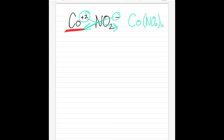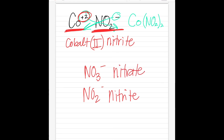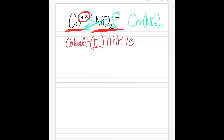Let's name this. Find the name of the first term: Co²⁺ - capital C, lowercase o. I see cobalt. It is highlighted, so I need a Roman numeral. This says plus two, so I need Roman numeral II. If it were plus three - the other option for cobalt - it would be Roman numeral III. Now NO₂ is polyatomic, so I go to the back side of my periodic table. NO₂⁻ is called nitrite. Be careful - NO₃⁻ is nitrate and NO₂⁻ is nitrite. One letter difference but they are completely different chemicals. For example, calcium nitrate and calcium nitrite are very different compounds. So the name is cobalt(II) nitrite.